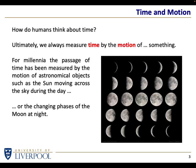Or of course we can look at the phases of the Moon. The Moon is going around the Earth in a month or thereabouts, and so we can use its changing phase to give us a longer time scale.